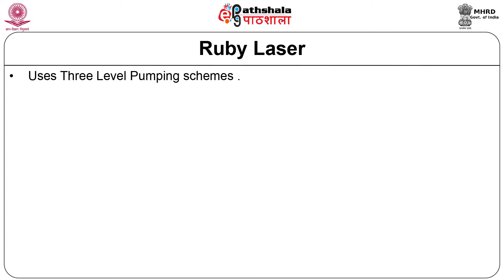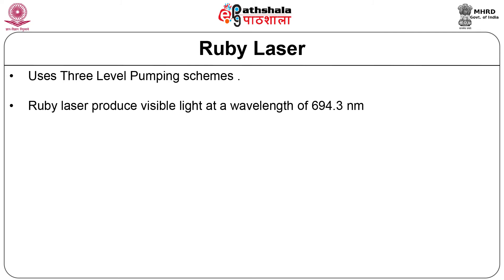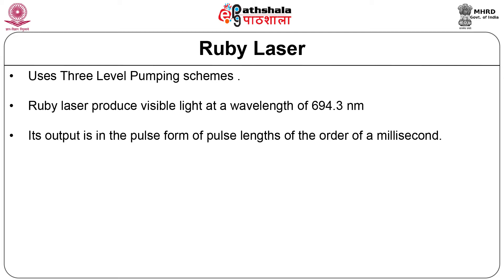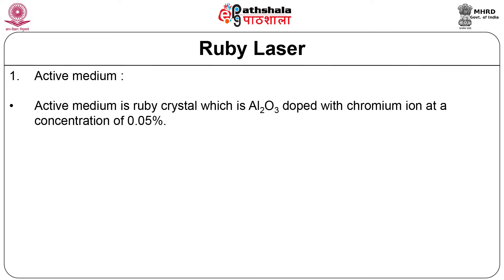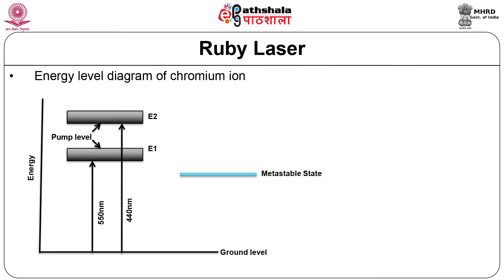Most lasers using this type of pumping scheme are pulsed lasers; the example is the ruby laser. The ruby laser is the first working laser, made by Theodore Maiman at Hughes Research Laboratories in 1960. Ruby laser produces visible light at a wavelength of 694.3 nanometres, which is a deep red colour. Its output is in pulse form with pulse lengths of the order of a millisecond. The active medium is a ruby crystal which is Al₂O₃ doped with chromium ions at a concentration of 0.05 percent. These chromium ions constitute the active centres, providing a set of three energy levels suitable for lasing action.